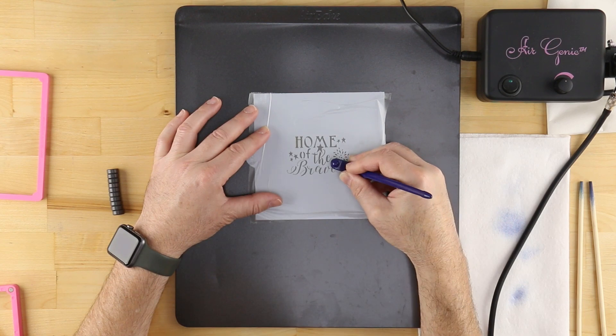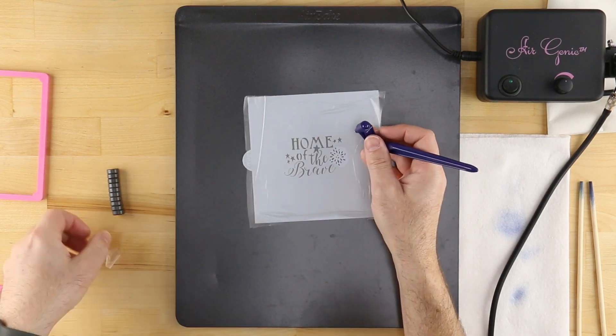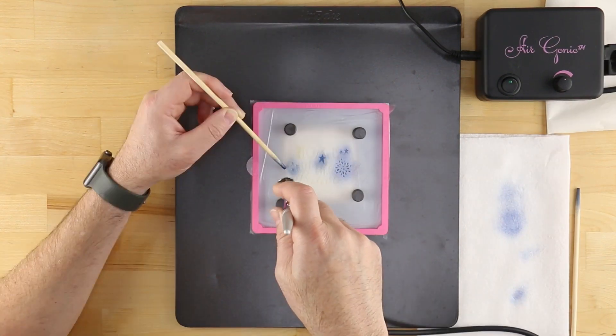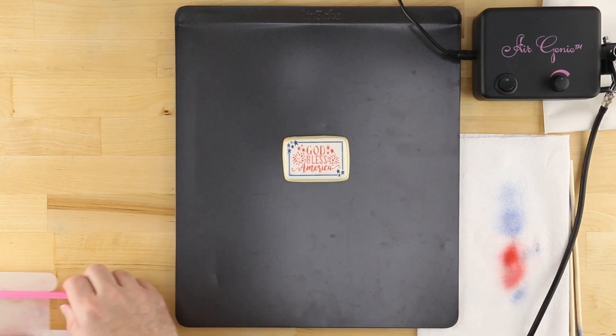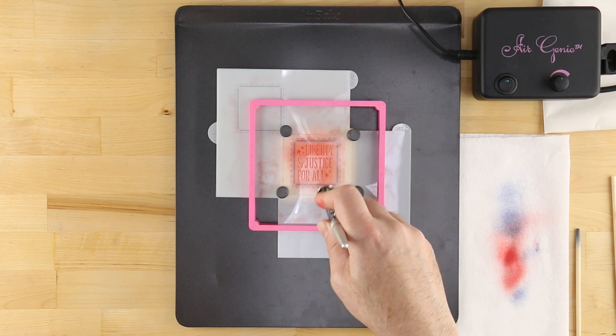These include the Air Genie Airbrush System, Stencil Genie, Quadrant Masking Tool, Gyrocut Craft & Hobby Cutting Tool, Cookie Magnets, DecoPack Airbrush Food Coloring, and Cookie Cutters.